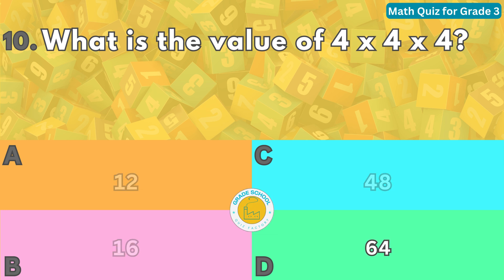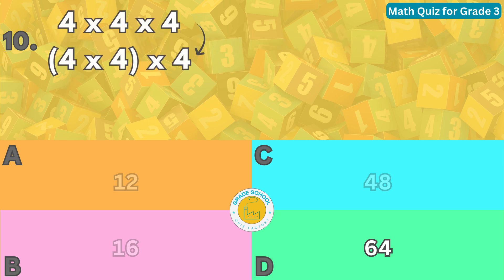To find the value of the expression, we multiply four by four by four. We can use the associative property of multiplication, which states that the order of grouping the factors does not change the product. For example, we can group the first two factors and multiply them first, then multiply the result by the third factor. We get four times four times four equals 16 times four equals 64.